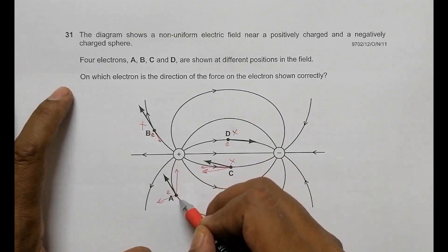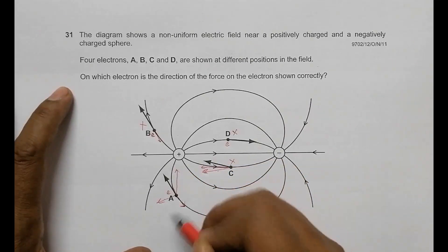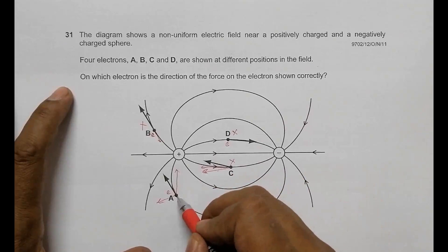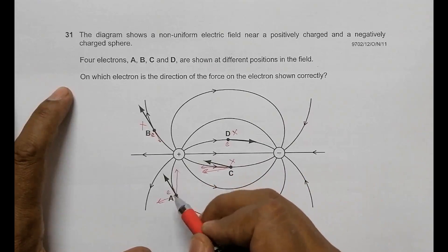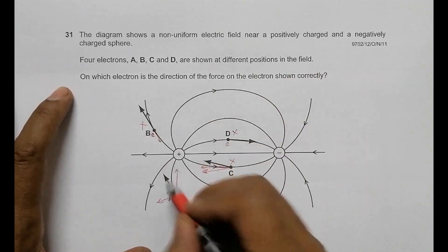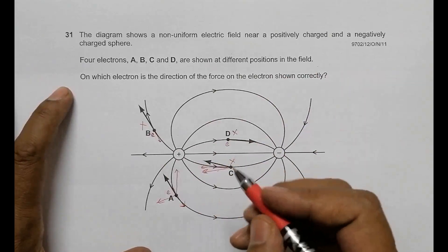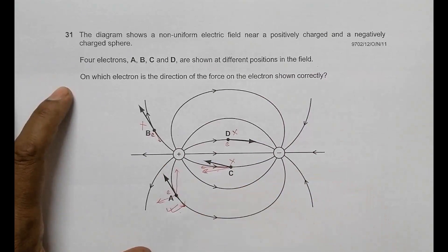Additionally, the direction shown for A corresponds to the force applied by the field on a positive charge, and since an electron is negative, the force on it is exactly opposite - which is consistent with what is shown. So the correct choice is A.